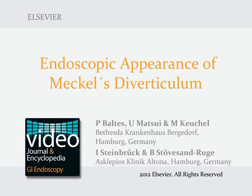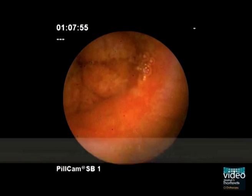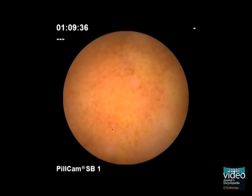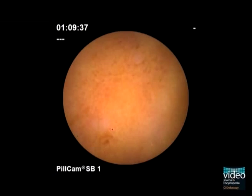Meckel's diverticulum is typically located 40 to 100 cm proximal to the ileocecal valve. Capsule endoscopy in this 23-year-old patient with mild iron deficiency anemia shows the entrance of a Meckel's diverticulum. The bridge between the small bowel lumen and entrance is thickened with ulceration. The capsule presses against the entrance of the diverticulum with short glances into the lumen.